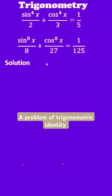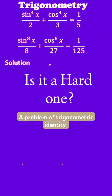Hello viewers, welcome. Today we are going to discuss a problem of trigonometry which is based on trigonometric identity. Here an equation is given and from this you have to prove the following identity. For that you have to start with the equation first.